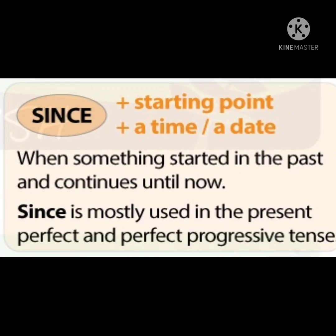'Since' is used for a starting point — a time or a date. It is used when something started in the past and continues until now. 'Since' is mostly used in the present perfect and present perfect progressive tense.